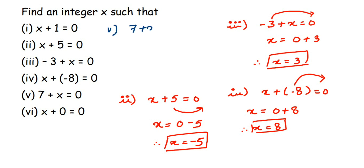The fifth question is 7 plus x is equal to 0. We want the x value, so we transpose 7 to the other side. Seven is positive, so when transposed it becomes negative: minus 7. Therefore, x is equal to minus 7.